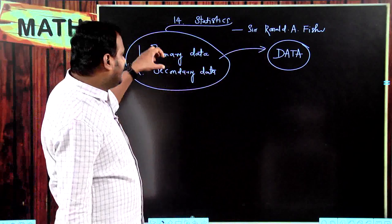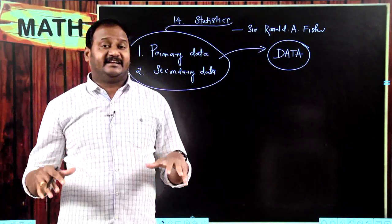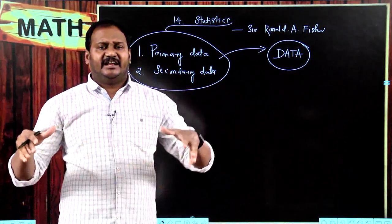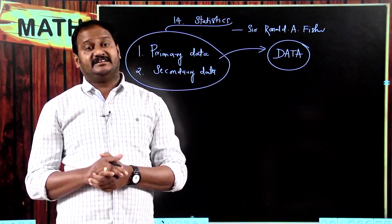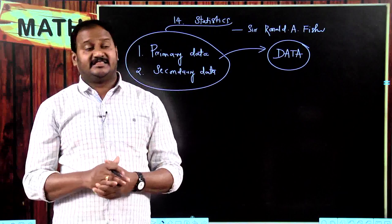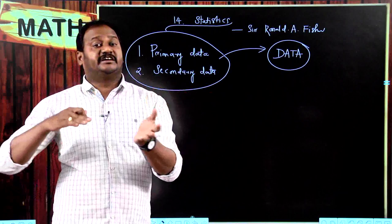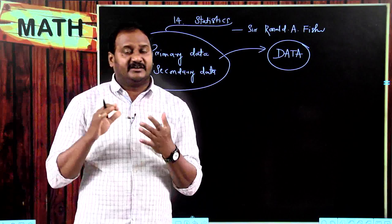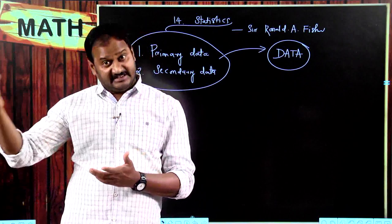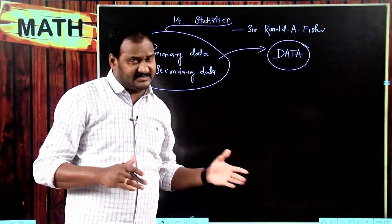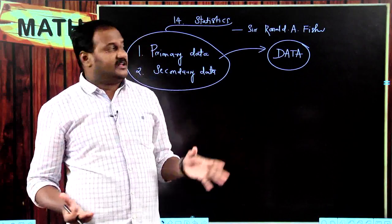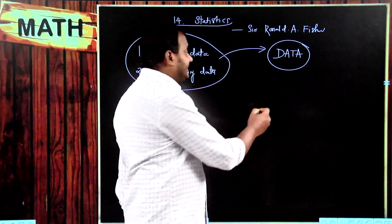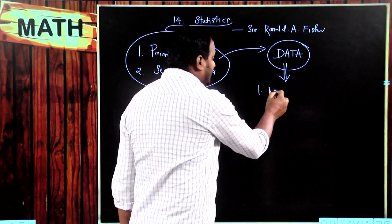Whether I collect primary data or secondary data, the data I collect roughly — what the first student got, second student got, third, fourth — is called raw data. With the help of that raw information, I cannot directly say what is the average of the class, or how many students scored more than 80 marks, or more than 75, or below 30. The data collected roughly is called raw data, rough data, or ungrouped data.